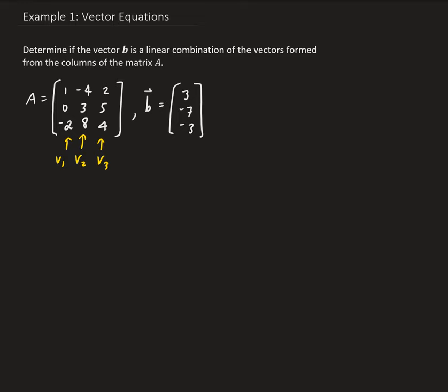So in other words, we have X1 as a scalar value, so X1 times V1 plus X2 times V2 plus X3 times V3 equals B. If B can be expressed as a linear combination of V1, V2, and V3, that means we would have a solution — we would find the values for X1, X2, and X3.